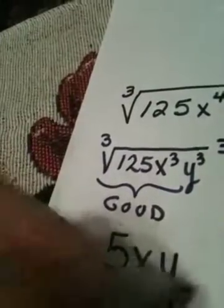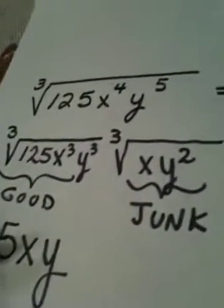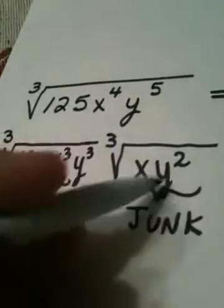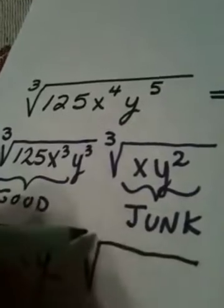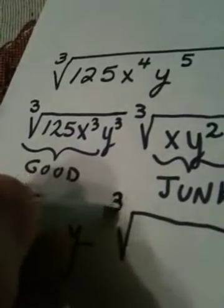3 divided by 3 is 1. That leaves me with Y to the 1st. What happens with the junk? Well the reason it's junk is because it can't come out from the radical. So it stays under the cube root. Please put that index.